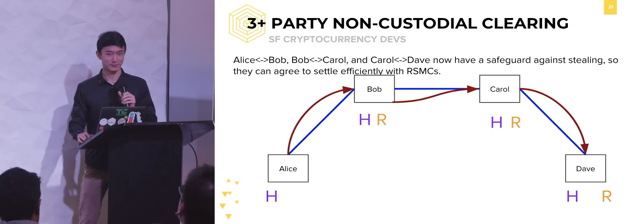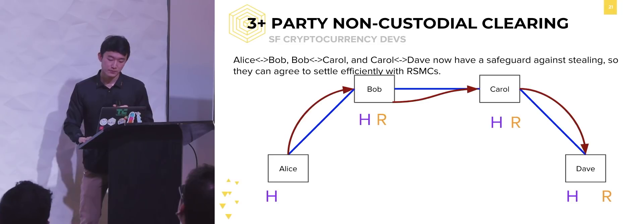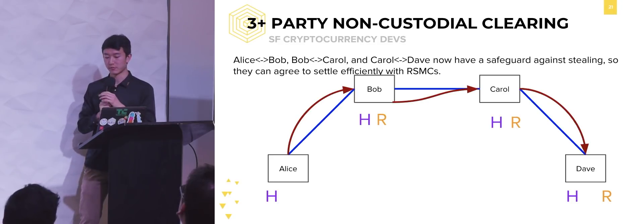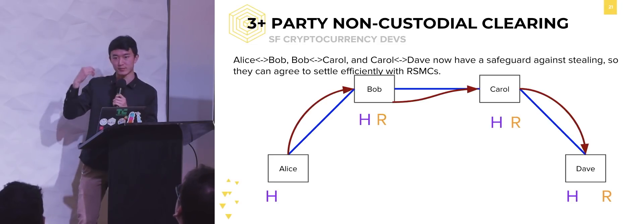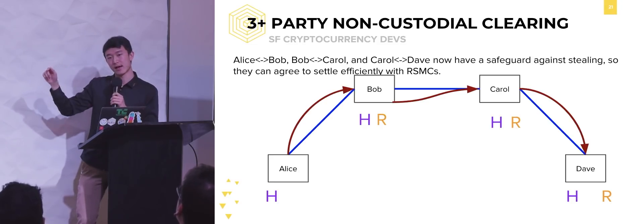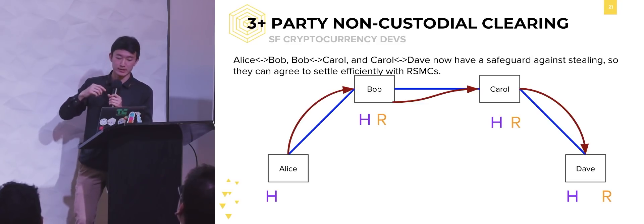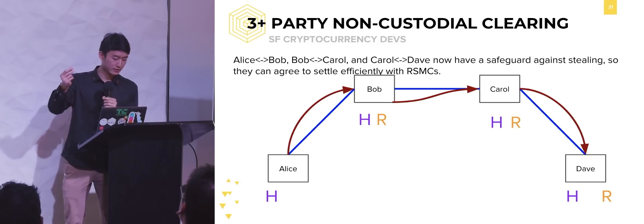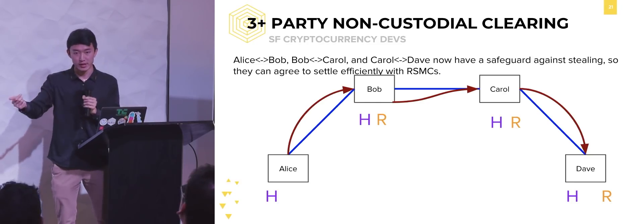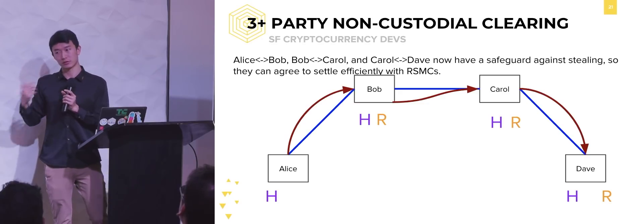Q: When does the on-chain transaction actually happen? In this case, there are no on-chain transactions, because we're assuming everyone already has these channels open. Where on-chain transactions come in is if people want to open a new channel — establishing these channels in the first place — or closing these channels.